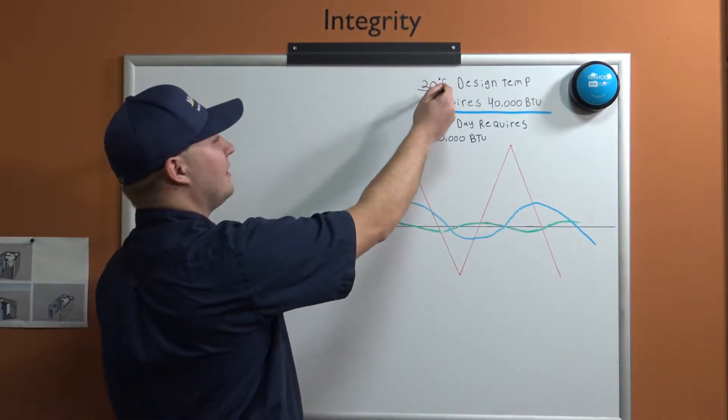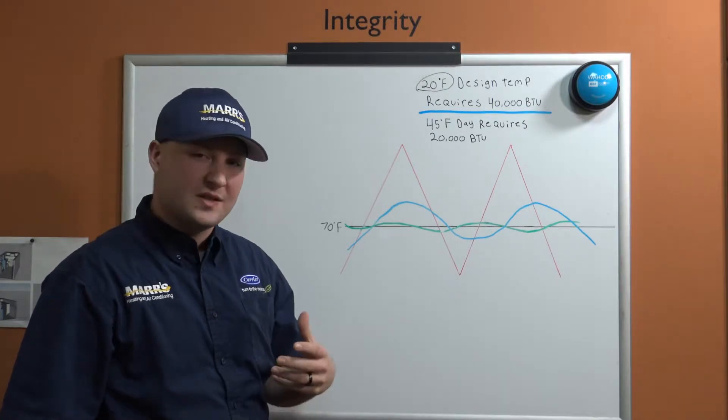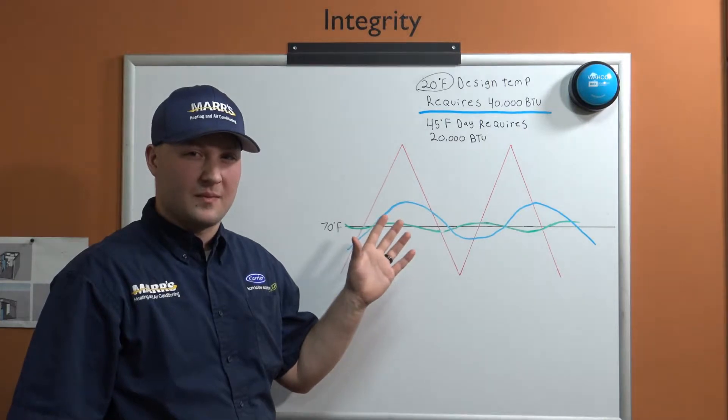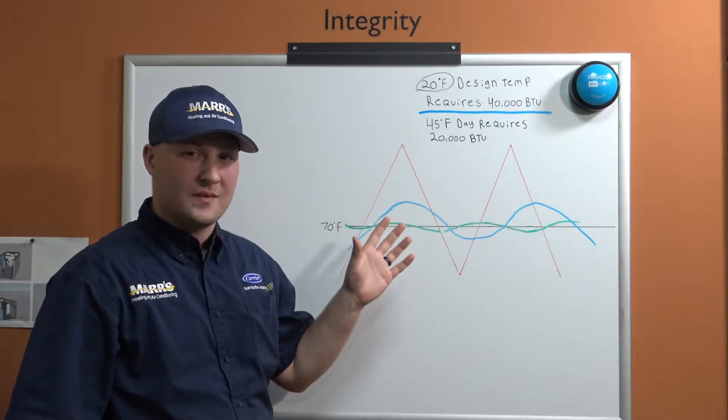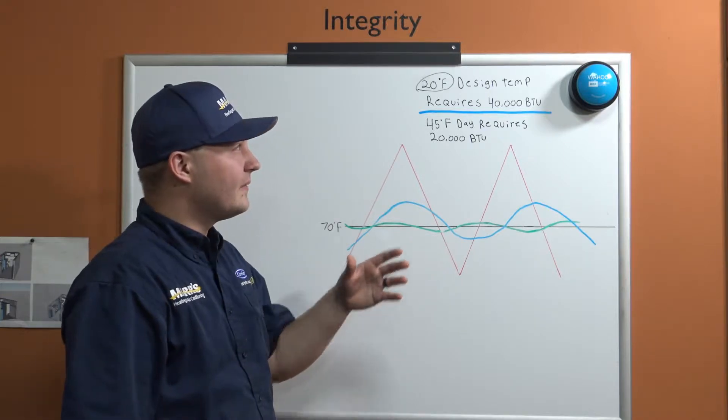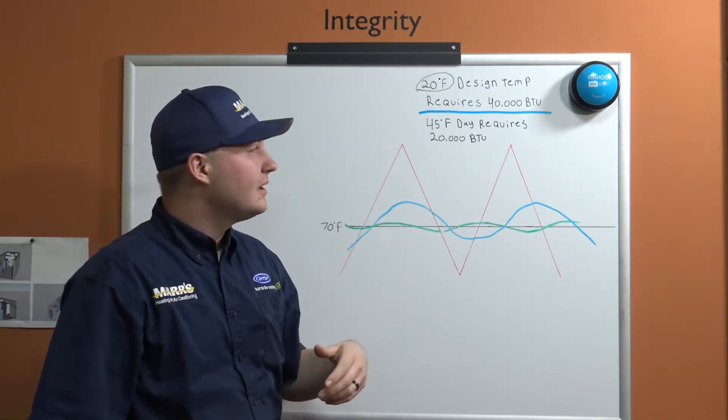This does not mean that we're consistently 20 degrees in this area. This just means this is kind of a worst-case scenario. Actually, this is typically less than five percent of the time that we're going to see 20 degrees, but we still want to size our equipment so that we have that heating capability when it does hit 20 degrees outside.